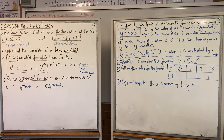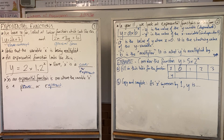So a is the value of y when x is 0 — it's the starting value of y. And b is the multiplier for x — it's what y is multiplied by.